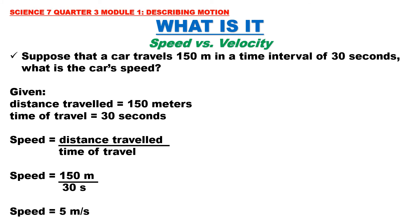Let us solve a problem involving speed. Suppose a car travels 150 meters in a time interval of 30 seconds. What is the car's speed? Given: distance traveled = 150 meters, time of travel = 30 seconds. Formula: speed equals distance divided by time. Solution: speed = 150 meters ÷ 30 seconds = 5 meters per second. The speed of the car is 5 meters per second.